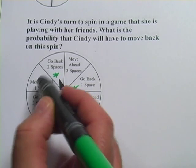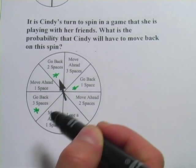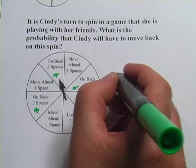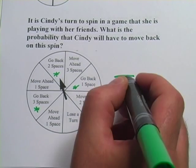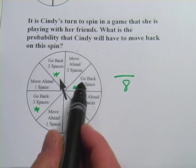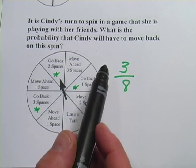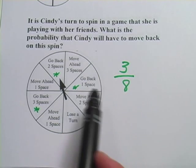And the total number here, one, two, three, four, five, six, seven, eight. There are eight possible places the spinner could land. So again, the total possible outcomes goes on the bottom. And the ones we're interested in go on the top. So there is a three out of eight probability that Cindy will have to move back on this spin.